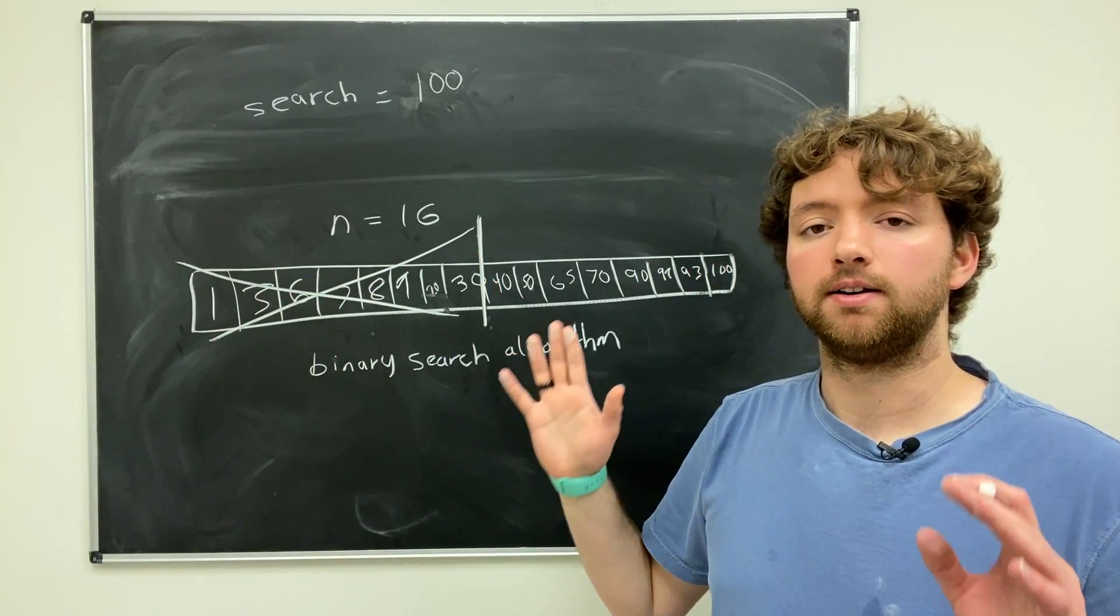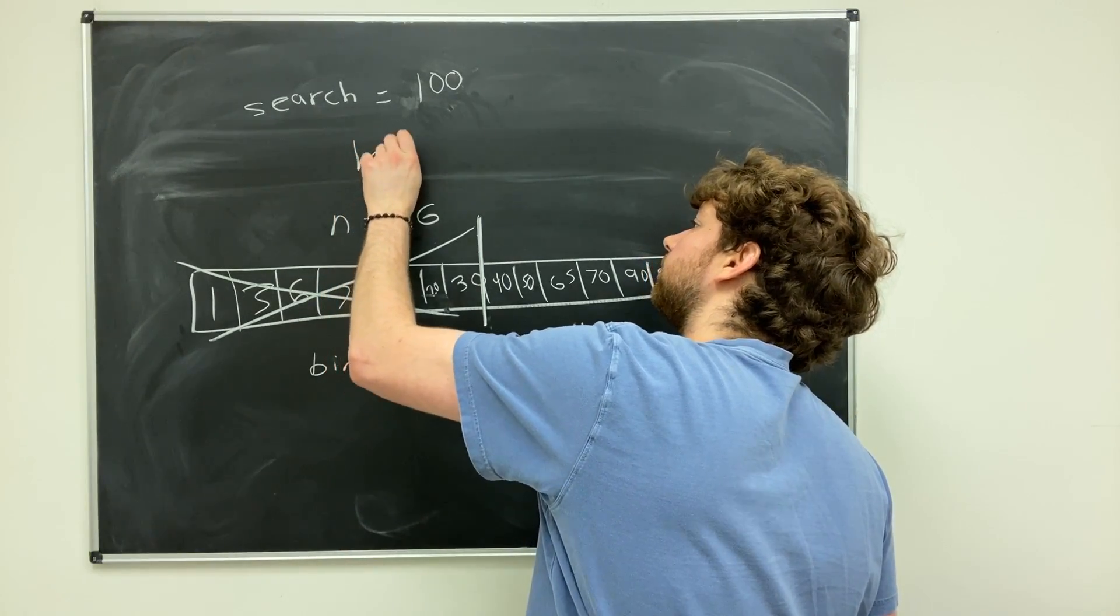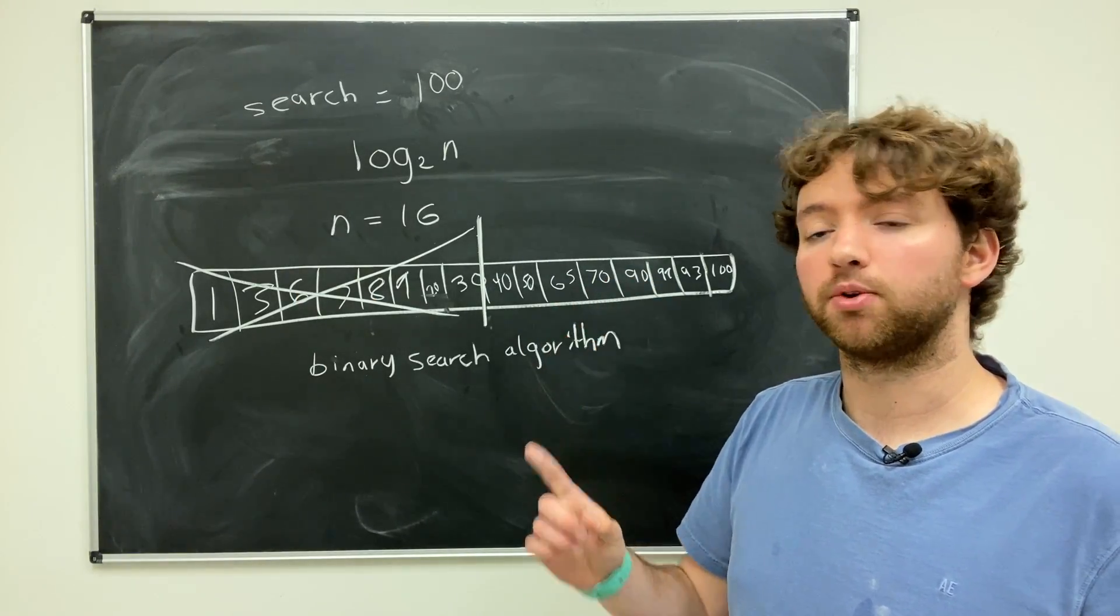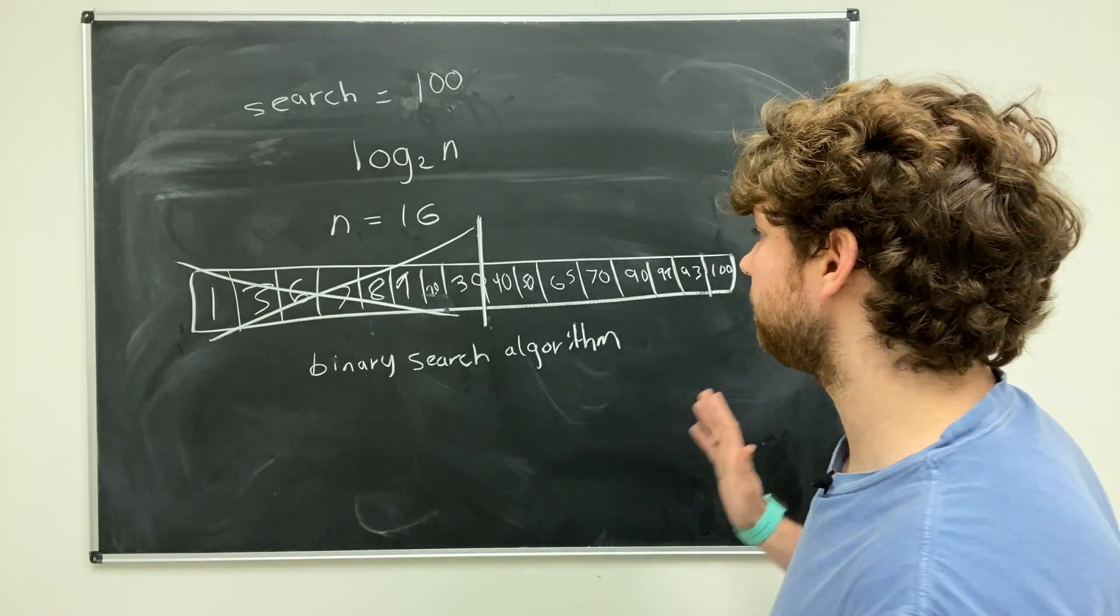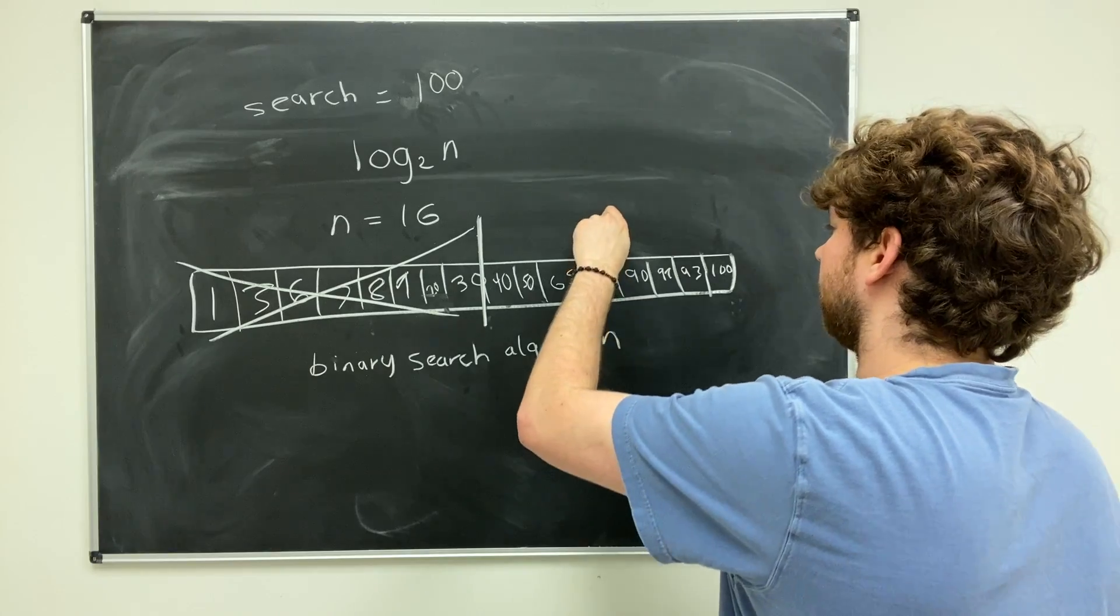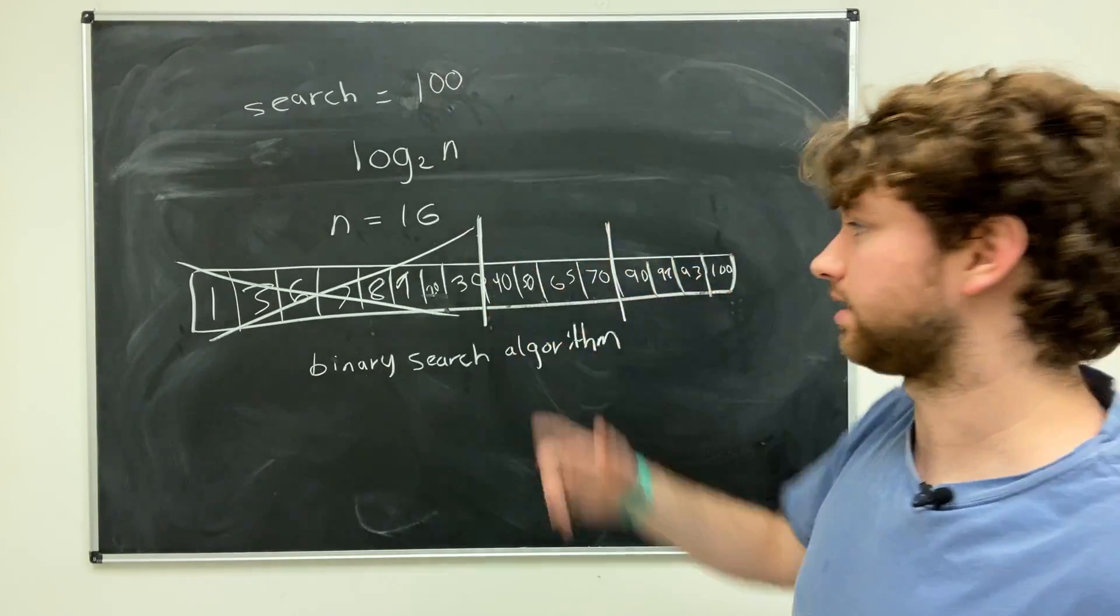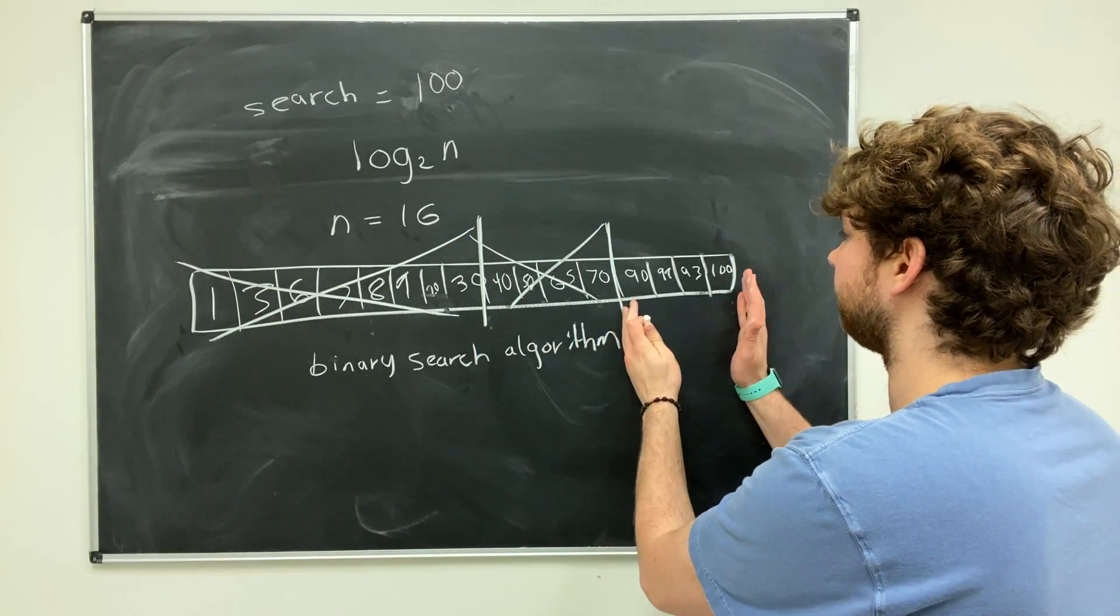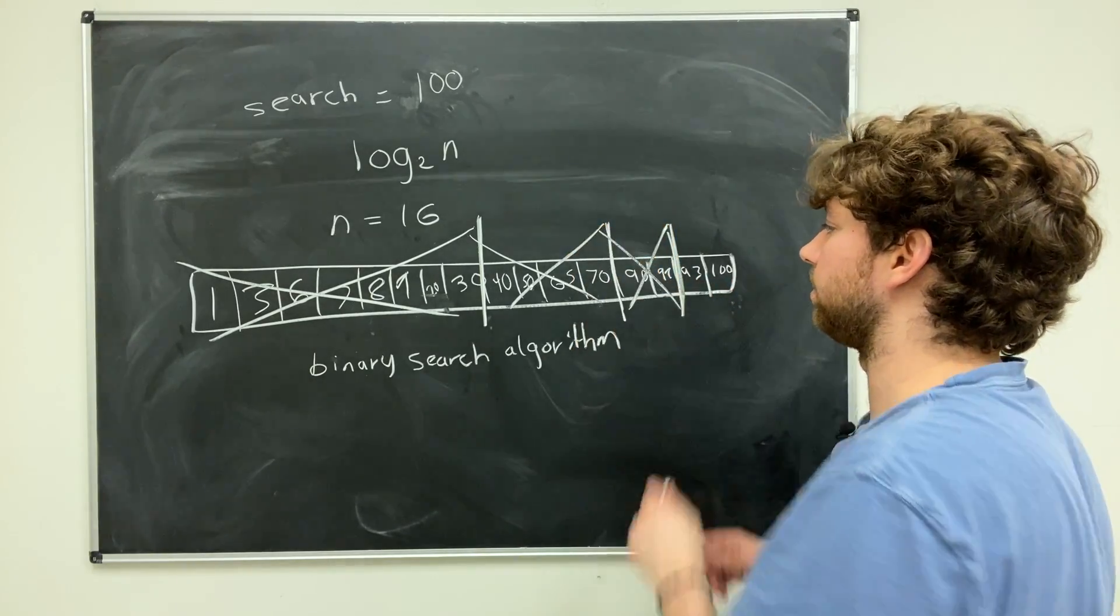So when you see log 2 of n, it's doing something like this, where each operation cuts the number of elements we have to work with in half. So now we just repeat that process again. So we split this in half right here. And we look at 70. Is 70 less than 100? Yes, it is. So we got rid of another half of data. Now we look at this half here, split it in the middle. Is 92 too low? Yes, it is. So we eliminate that half.